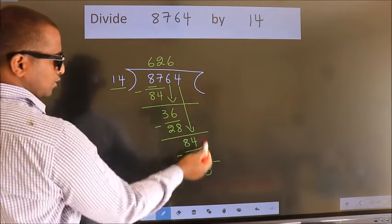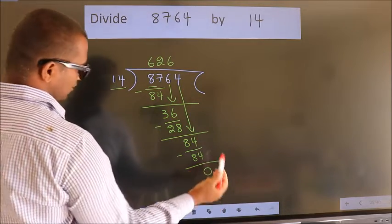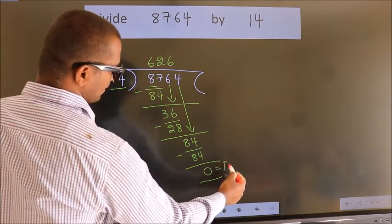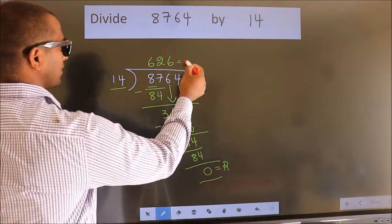No more numbers to bring down. So we stop here. This is our remainder. This is our quotient.